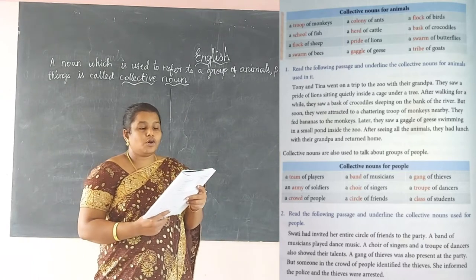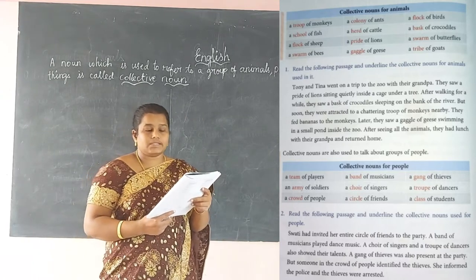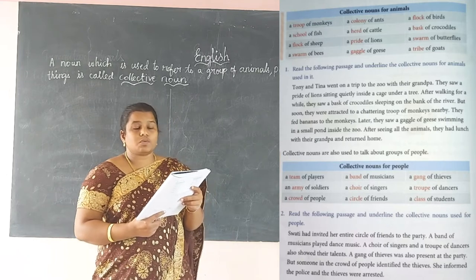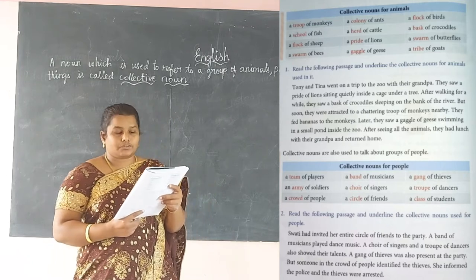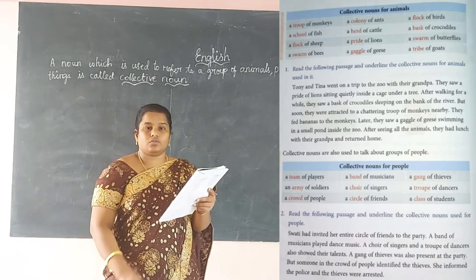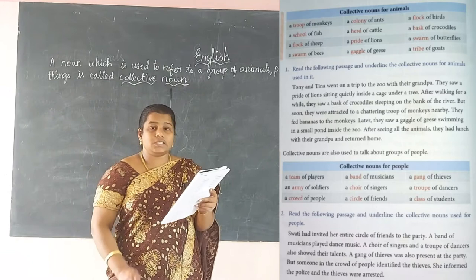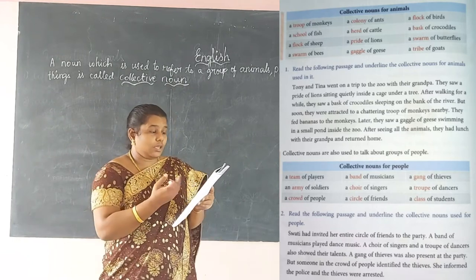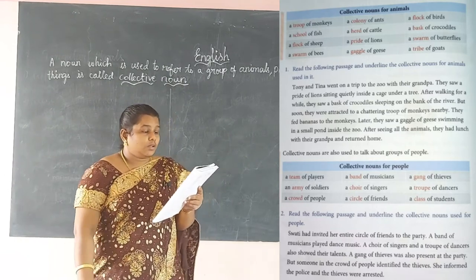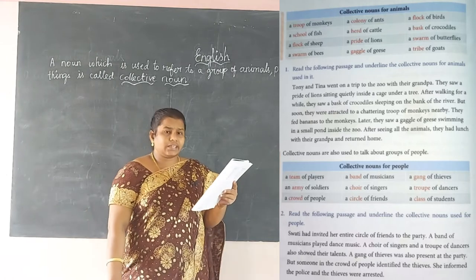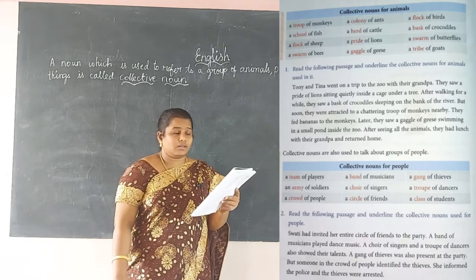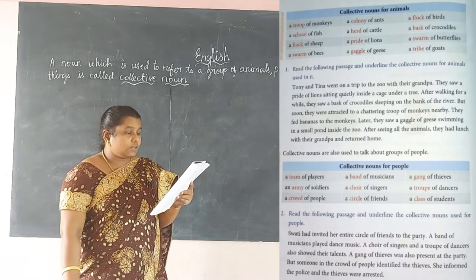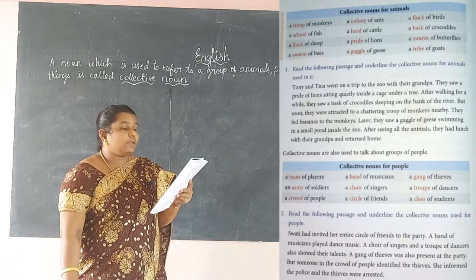Continuing the animal collective nouns: 'a gaggle of geese,' 'a flock of bats,' 'a basque of crocodiles,' 'a swarm of butterflies,' 'a tribe of goats.' These are all collective nouns for animals. Now from here there is a paragraph exercise: read the following passage and underline the collective nouns for animals used in it.